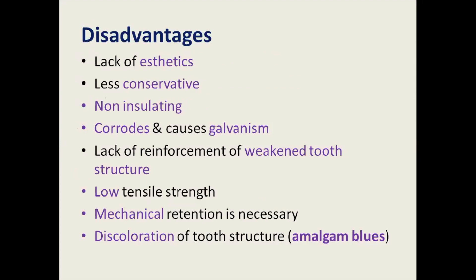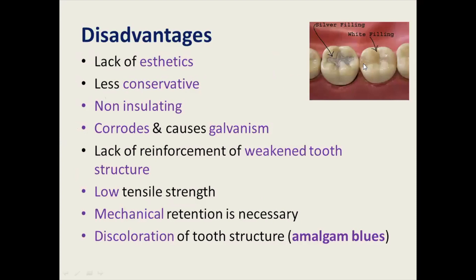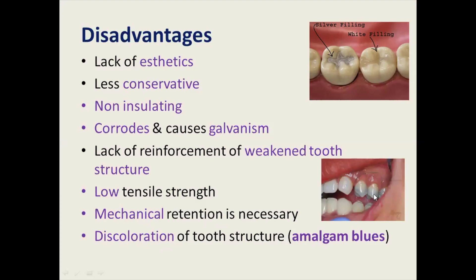The disadvantages of silver amalgam are: lack of aesthetics compared to tooth-colored materials; less conservative because you must follow cavity design principles; non-insulating — you require a zinc phosphate base before restoration; it corrodes and causes galvanism when dissimilar metal is opposing; lack of reinforcement of remaining tooth structure, requiring retentive pins; low tensile strength; mechanical retention is necessary as it is not chemically bonding; and discoloration of tooth structure known as amalgam blues.